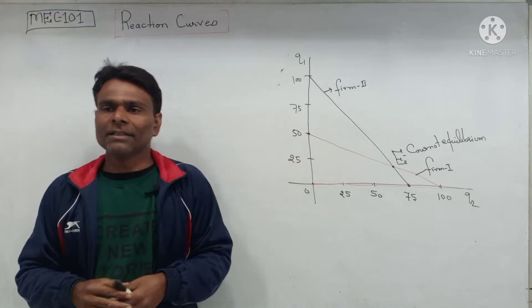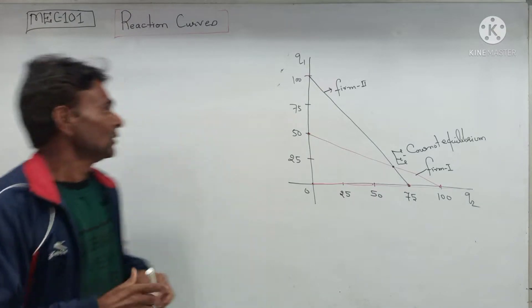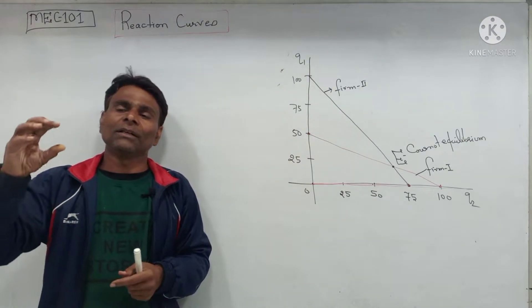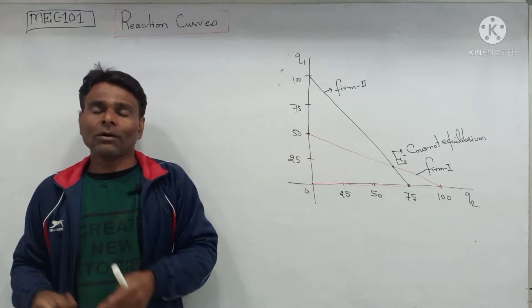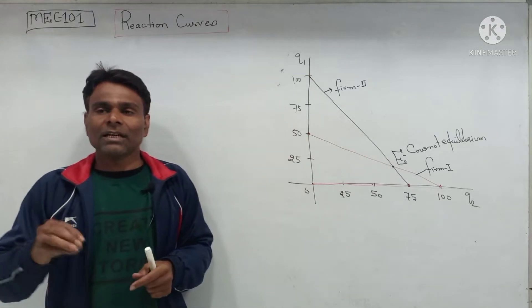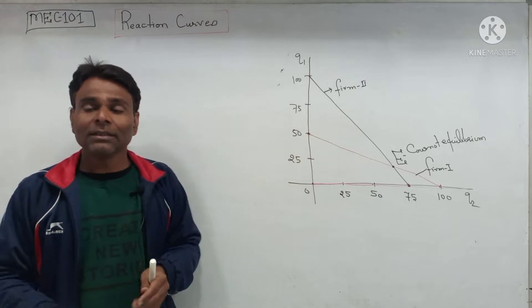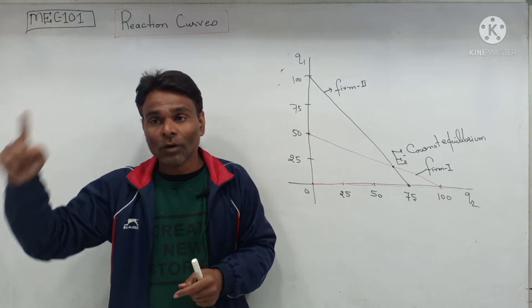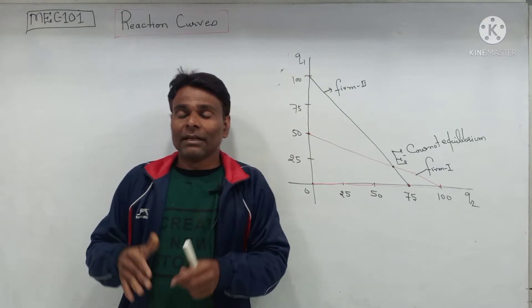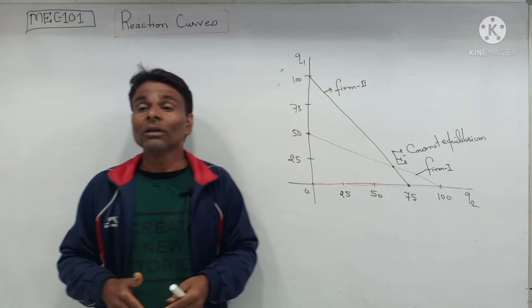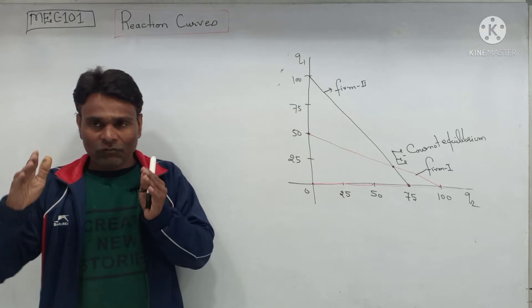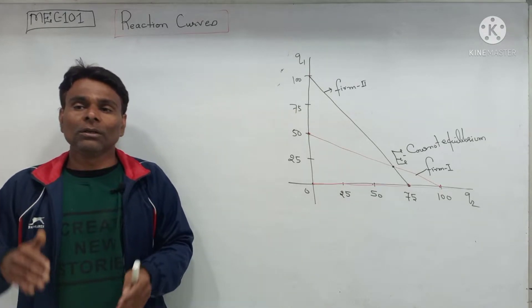In this video I will discuss the concept of the reaction curve. The reaction curve shows the relationship between the profit-maximizing output of a firm and how much output it thinks its competitor will produce. We can define the reaction function of firm one as the level of output being produced by firm one as a function of how much its competitor will produce. Likewise, we can define the reaction function of firm two as the level of output produced by firm two as a function of how much output it thinks its competitor will produce.